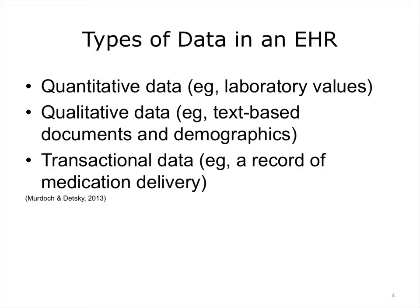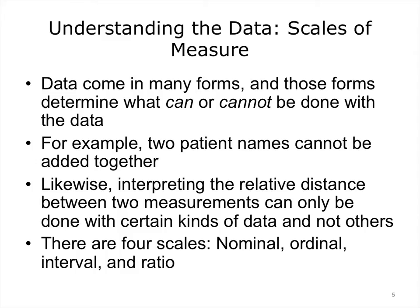We can also look at data in another way. Data come in many forms, and those forms determine what can and cannot be done with the data. For example, two patient names cannot be added together — it makes no sense to add John Doe and Maria Garcia, or to add eye color blue from one patient to eye color brown from another. However, it can be very important to graph a child's height over time, or to compare a patient's kidney function tests against their medications. The forms data can be categorized into are referred to as scales of measure, and there are four scales: nominal, ordinal, interval, and ratio.